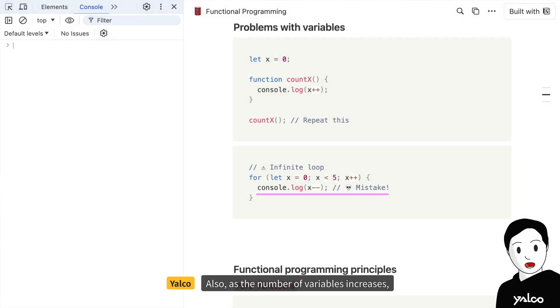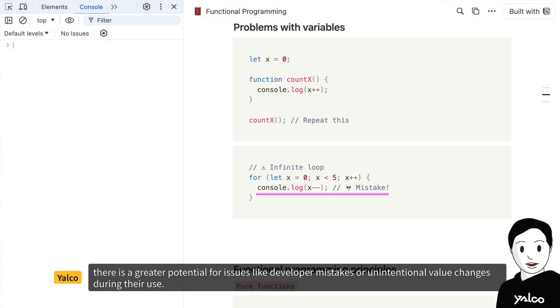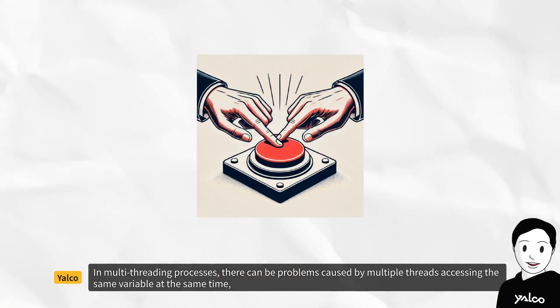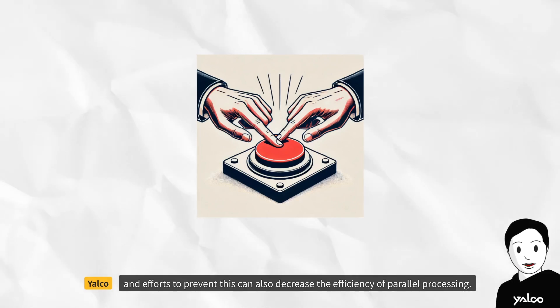Also, as the number of variables increases, there is a greater potential for issues like developer mistakes or unintentional value changes during their use. In multi-threading processes, there can be problems caused by multiple threads accessing the same variable at the same time, and efforts to prevent this can also decrease the efficiency of parallel processing.